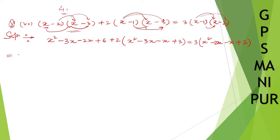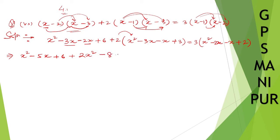So on the left: x squared minus 3x minus 2x gives minus 5x, plus 6. Then multiplying by 2: 2x squared, minus 4 into 2 gives minus 8x, and 2 into plus 3 gives plus 6. On the right: 3 times x squared gives 3x squared, and 3 into minus 3 gives minus 9x, plus 6.